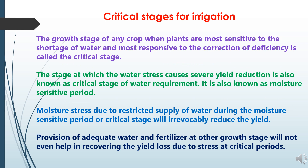Critical stages for irrigation — what is a critical stage? The growth stage of any crop when plants are most sensitive to shortage of water and most responsive to the correction of deficiency is called the critical stage. Alternatively, the critical stage is defined as the stage at which water stress causes severe yield reduction, also known as the critical stage of water requirement. It is also termed as the moisture sensitive period. Moisture stress due to restricted supply of water during the critical stage will irrevocably reduce the yield.